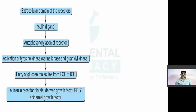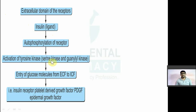We will now see the enzyme-linked receptor or tyrosine kinase-linked receptor. These are also present on the cell membrane. For example, insulin will interact with the tyrosine kinase receptor, causing phosphorylation of the receptor and activation of tyrosine kinase — including serine kinase and threonine kinase. This leads to entry from extracellular fluid to intracellular fluid. The example is the insulin receptor — these are the type of tyrosine kinase receptors.